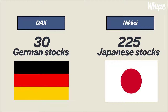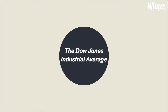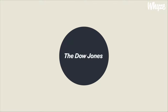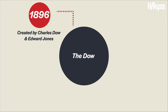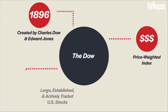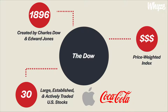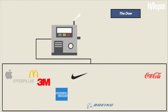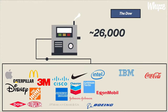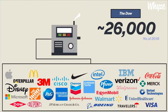Let's take a closer look at the top three indices in the United States. First, let's look at the Dow Jones Industrial Average, more popularly known as the Dow Jones or simply the Dow. The Dow was created by journalist Charles Dow in 1896 and was named after himself and his business partner Edward Jones. The Dow is a price-weighted average of 30 large, established, and actively traded U.S. stocks, including popular blue chip stocks like Apple, Coca-Cola, McDonald's, and Nike that trade on the New York Stock Exchange and the Nasdaq. The Dow is represented as one very large value that will increase or decrease based on the movement of the 30 stocks within the index.